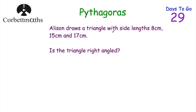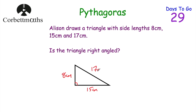The question says: Allison draws a triangle with side lengths 8 centimetres, 15 centimetres, and 17 centimetres. Is the triangle right-angled? I'm going to draw a sketch of a triangle and label the sides: 8 is the smallest, 15 is the middle, and 17 centimetres is the longest side. We label them A, B, and C. If Pythagoras's theorem works — A squared plus B squared equals C squared — then it is a right-angled triangle; if not, it isn't.